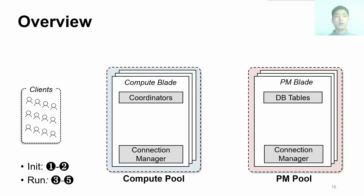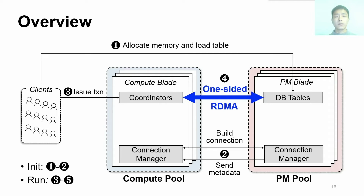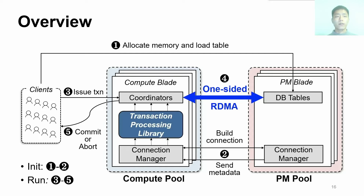This is our system overview. The compute pool runs coordinators that access data in the PM pool. In steps 1 and 2, FORD enters an init stage to allocate memory and build RDMA connections. Then FORD starts to run transactions. The client issues transactions to coordinators, which leverage one-sided RDMA to operate remote data. After processing, the coordinator reports the results to the client. We provide a runtime library for coordinators to process transactions. The data in the PM pool are organized by indexes such as a hash table. My following talk concentrates on the transaction schemes in our runtime library.